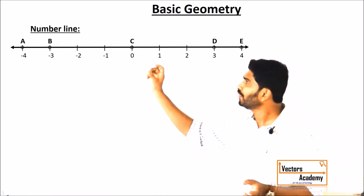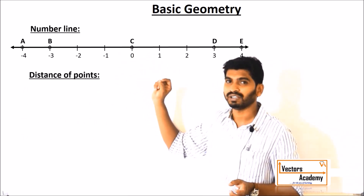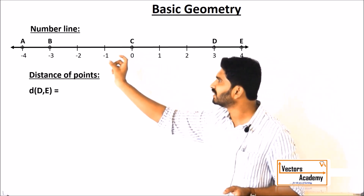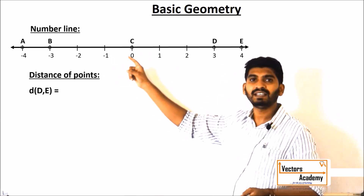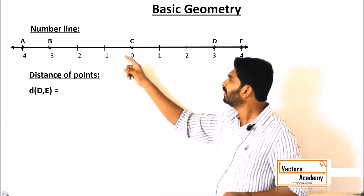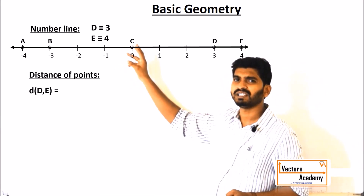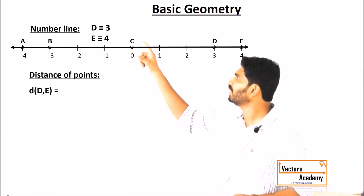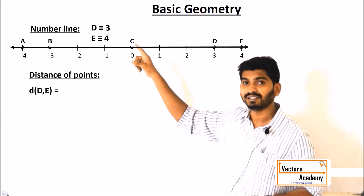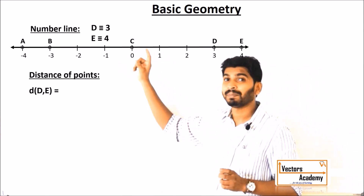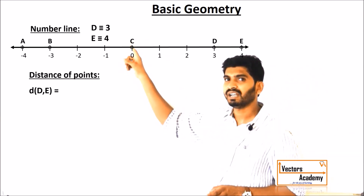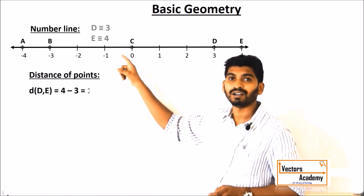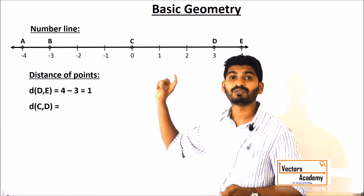Now how do we find the distance between two points using these coordinates? If we have to find the distance between D and E, we need to see the coordinates of D and E. The coordinate of point D is 4, whereas the coordinate of point E is 3. So we subtract the smaller coordinate from the larger coordinate: 4 minus 3, that will give you 1. So distance between D and E is 1 unit.